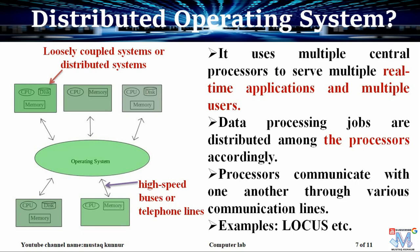Now coming to the distributed operating system. Distributed operating system usually uses multiple processors or multiple CPUs. These are connected together with the help of high-speed buses or telephone lines. These types of systems are also known as loosely coupled systems because one CPU does not have sufficient information about another CPU. In this figure, we can see that when a task is assigned to a computer, that computer distributes the task among all the processors, and hence it processes the task with very high speed. An example of a distributed operating system is LOCUS.